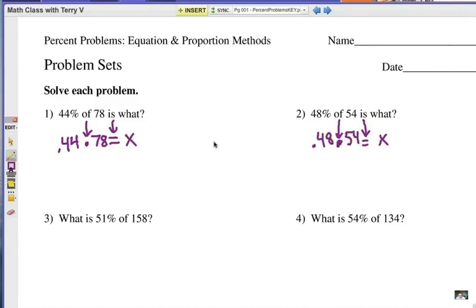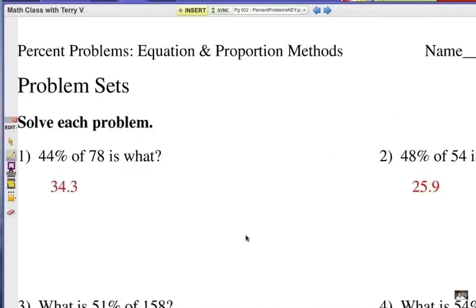Now in these two cases, which happen to be the same structure, it's just plain old multiplication. I'm going to do .44 times 78. And that will give me my what number, the whole number. Here it's .48 times 54. And here are your two answers rounded to the nearest tenth: 34.3 and 25.9.